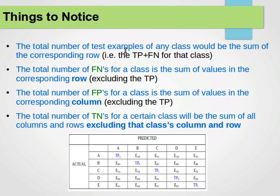The total number of test examples of any class would be the sum of the corresponding row. So the total number of test points from class D, for example, will be the sum of row D. Remember that predicted are columns and actuals are the rows. Now, the total number of false negatives for a class will be the sum of values in the corresponding row of that class without the true positive.